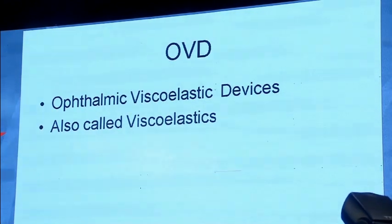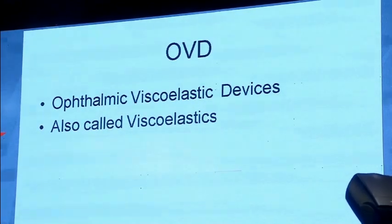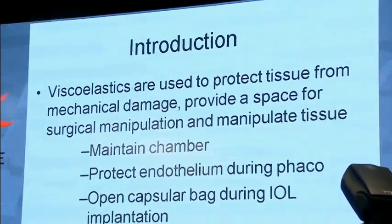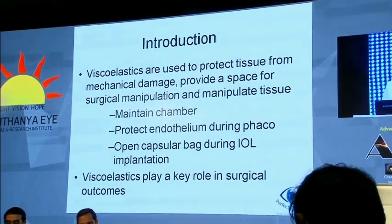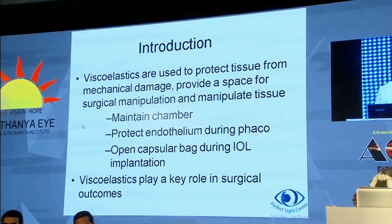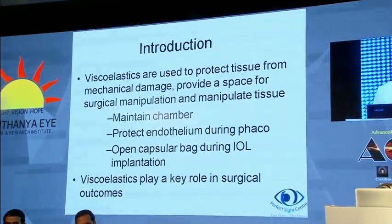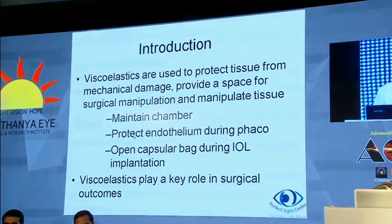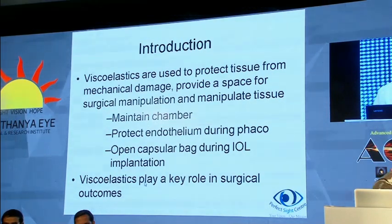OVDs are also commonly called viscoelastics — that's what we use in the OT. These are used to protect tissue from mechanical damage, provide a space for surgical manipulation, and manipulate tissues. They help maintain the chamber, protect the endothelium during phacoemulsification, and open the capsular bag during IOL implantation. Viscoelastics play a key role in surgical outcomes.